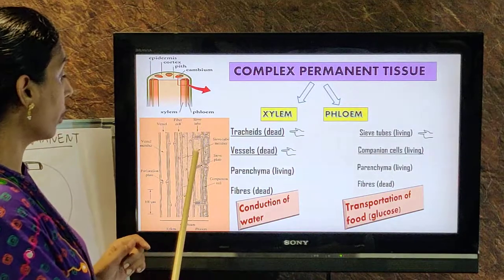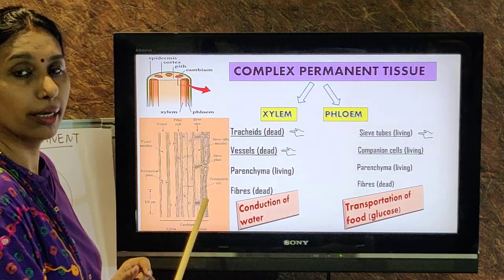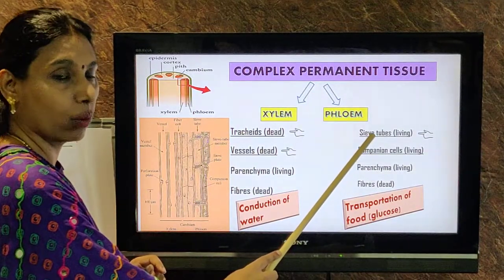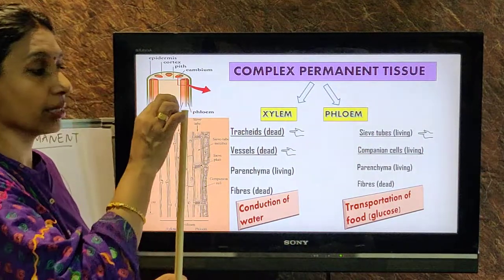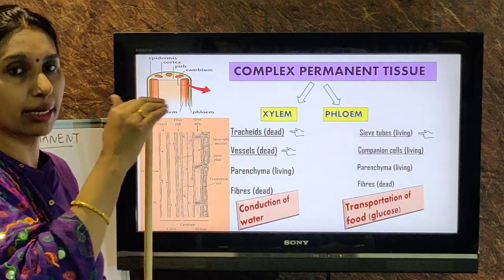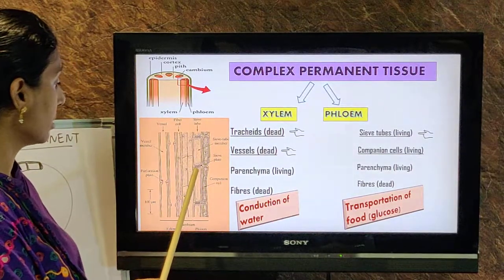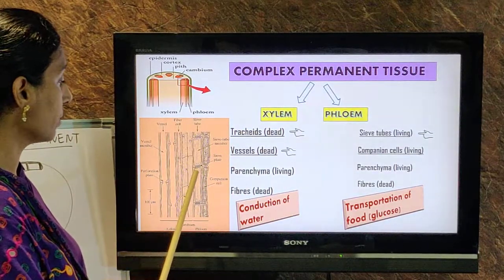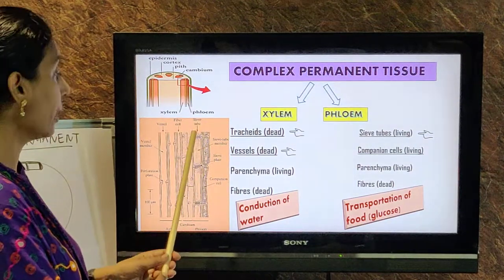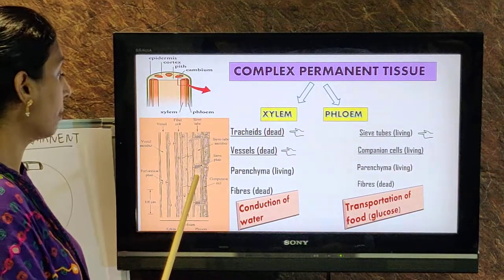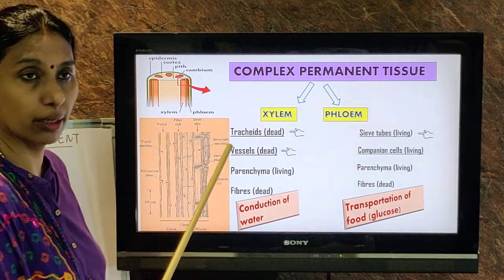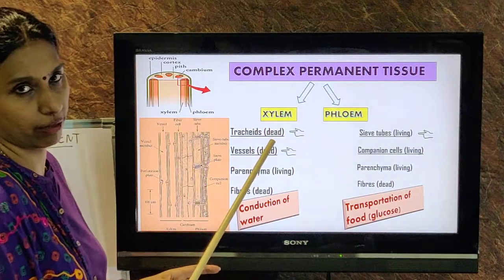Now look at the phloem — it is not made up of dead elements. The sieve tubes are living. Why is it called a sieve tube? This is one sieve tube; between two sieve tubes you have a sieve plate, just like a filter. They are living cells and they help in the transportation of food from the leaves to the other parts of the plant.